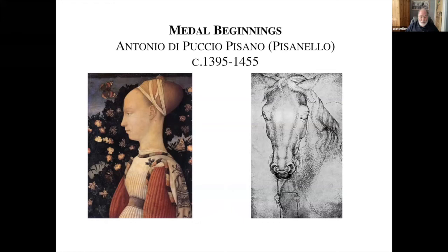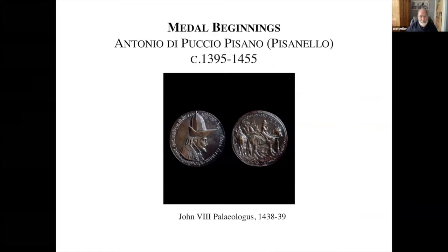The first medal to come about was designed by the well-known painter Antonio di Puccio Pisano, called Pisanello. This is the first medal he created — not the first bas-relief or medallic-like item of the period, but the first round medal. It was cast bronze, as all were at the time. It had an obverse and a reverse, and the two sides worked together in a unified theme. That's what really defined the medal for a very long time.